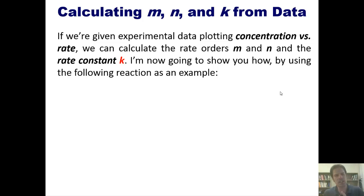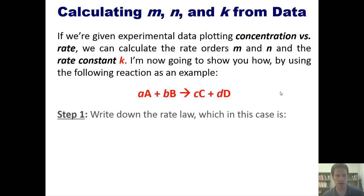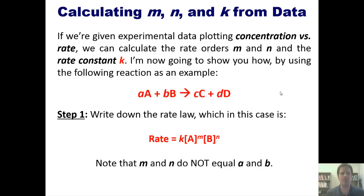That brings us back then to how we go about calculating M, N, and K. If we're given experimental data plotting concentration versus rate, as I showed you in the earlier example with ammonium and nitrogen dioxide, we can calculate the rate orders M and N and the rate constant K. I'm now going to show you how by using the following reaction as an example. If we were asked to calculate M, N, and K, here's what we do. Step one, write down the rate law, which in this case is going to be rate equals K times the concentrations of A and B, each raised to some exponent M and N.